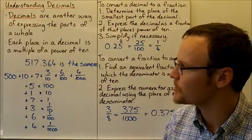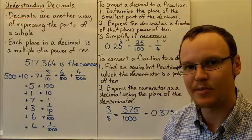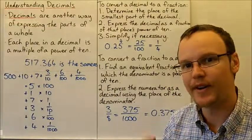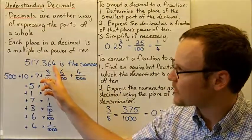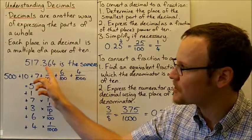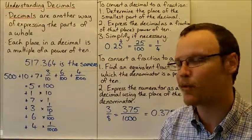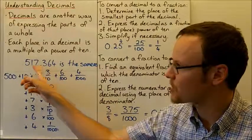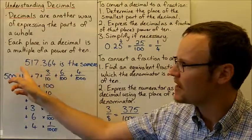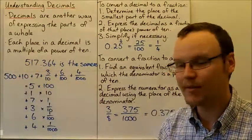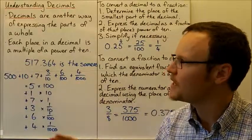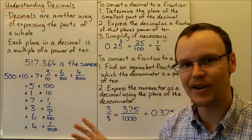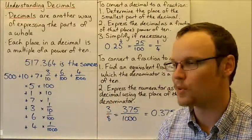Each of these decimal places has a different value. Moving to the left, each place is 10 times the one before it, and moving to the right, it's 10 times smaller.